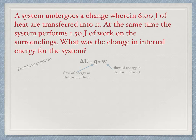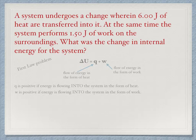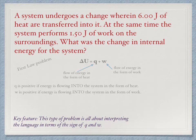This is the important convention for these problems — scientists all agree that this is how we view the situation. Q is positive when energy flows into the system in the form of heat, and W is positive when energy flows into the system in the form of work. The real challenge is interpreting the language of questions in terms of the sign of Q and W.